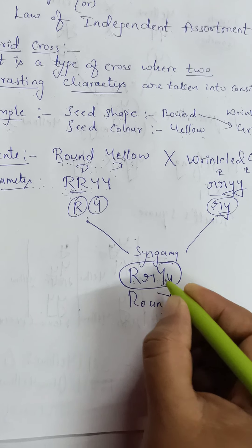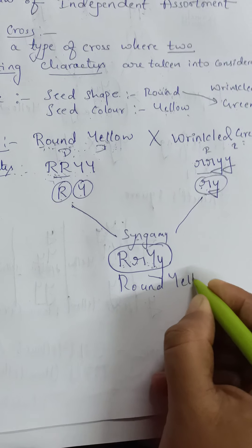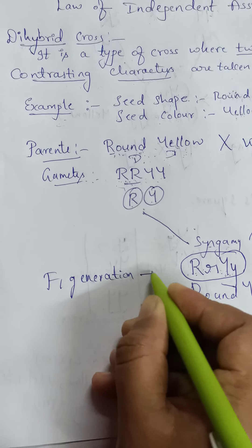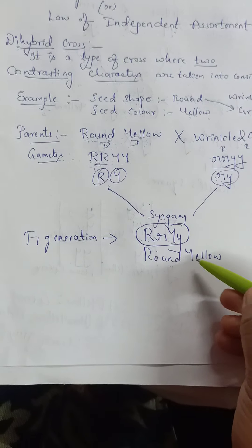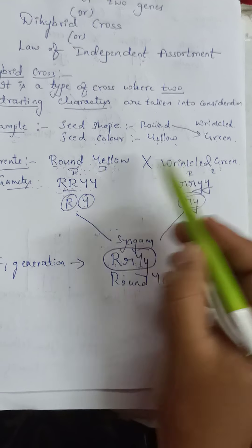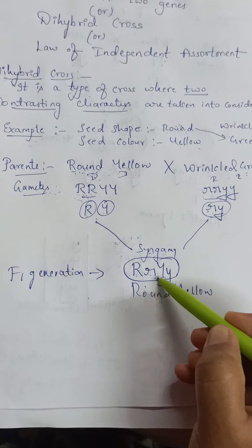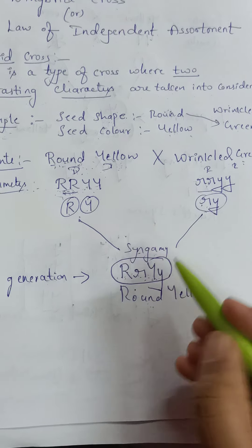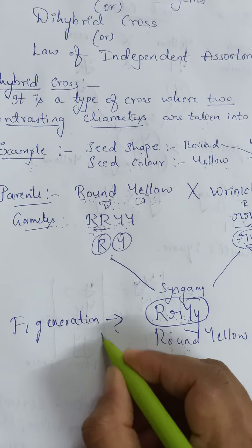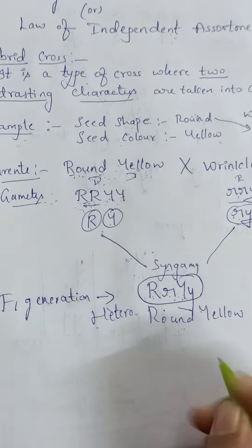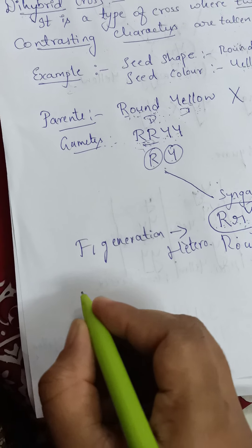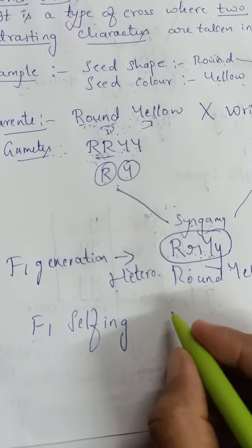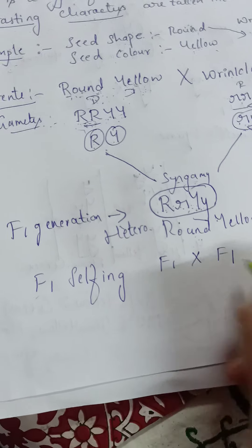After combining the gametes, the F1 generation is obtained. Normally, whether it is monohybrid or dihybrid cross, the dominant character gets expressed in the F1 generation. So when round yellow is crossed with wrinkled green, the dominant round yellow characteristic feature will be expressed in the F1 generation. But there is a difference — the parents were homozygous (both alleles same), while this F1 generation is heterozygous round yellow.